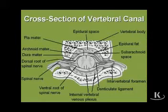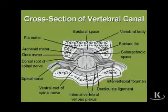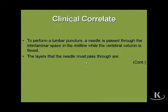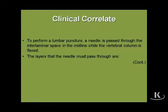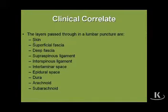When we're doing a lumbar puncture, we don't want to be in a region where the spinal cord might be damaged, and therefore we have to stay below the spinal cord. When we do a lumbar puncture, let's be cognizant of the layers we have to pass through. The needle passes through the interlaminar space, done in the midline with the vertebral column flexed. We can look at the layers we're going to pass through, starting from the outside and working our way in.